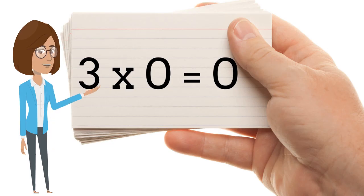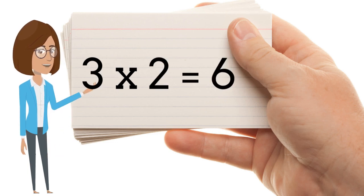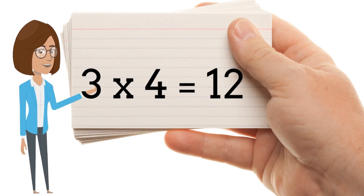3 times 0 is 0. 3 times 1 is 3. 3 times 2 is 6. 3 times 3 is 9. 3 times 4 is 12.